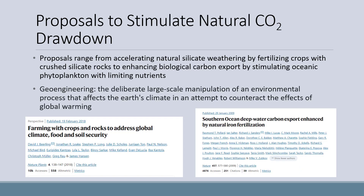There are many proposals that would stimulate CO2 drawdown from the atmosphere naturally. Proposals range from accelerating natural silicate weathering by fertilizing crops with crushed silicate rocks, to enhancing biological carbon export by stimulating oceanic phytoplankton with limiting nutrients. These are examples of geoengineering — the deliberate large-scale manipulation of an environmental process that affects the Earth's climate in an attempt to counteract the effects of global warming. All proposals of geoengineering require a strong understanding of the Earth's systems and its feedbacks.